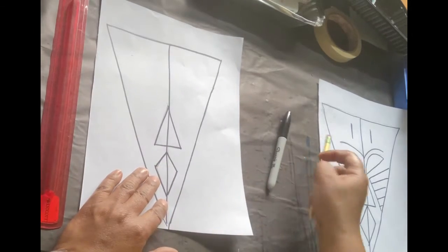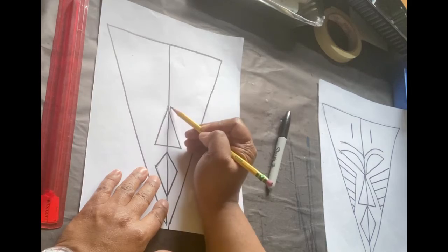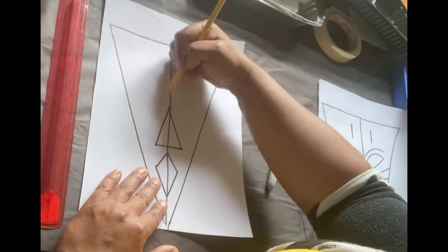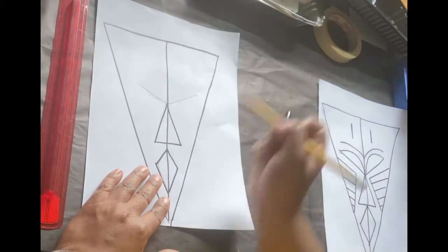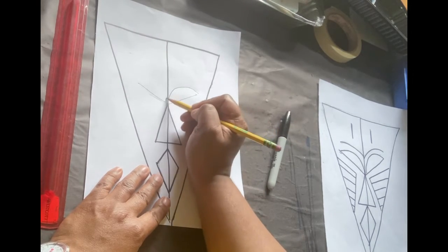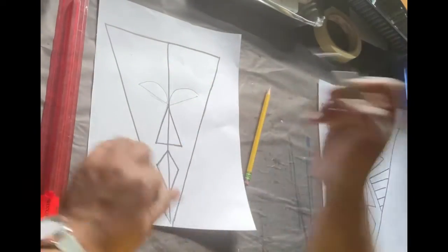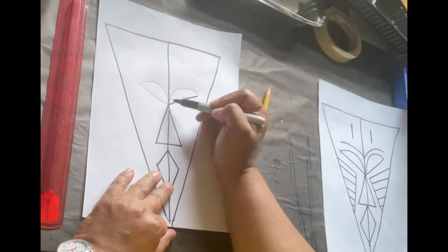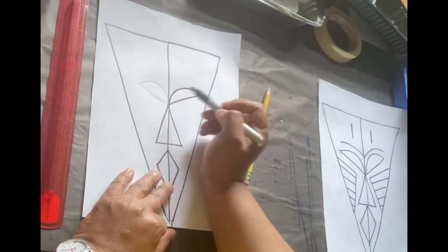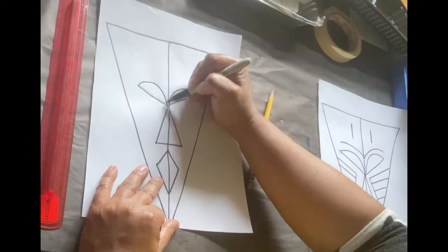Next, we're going to create eyes. Diagonal line, diagonal line. Curve line on top and curve line on top. Diagonal line, curve line on top. Diagonal line, curve line on top.